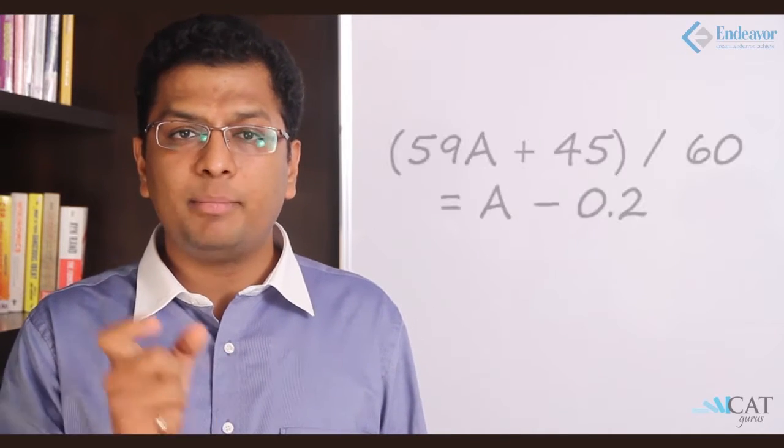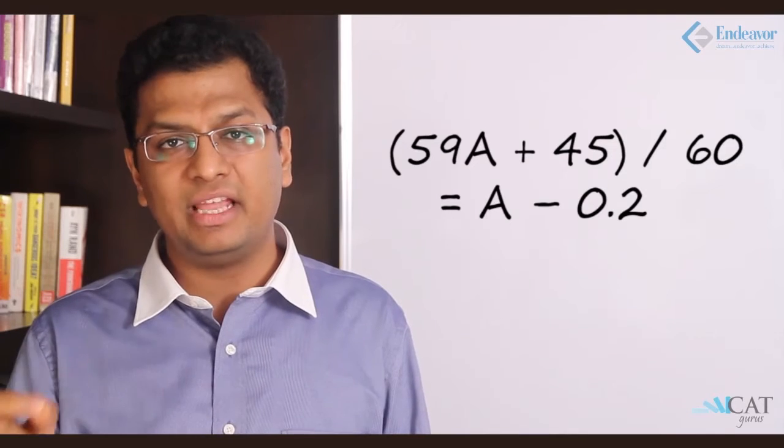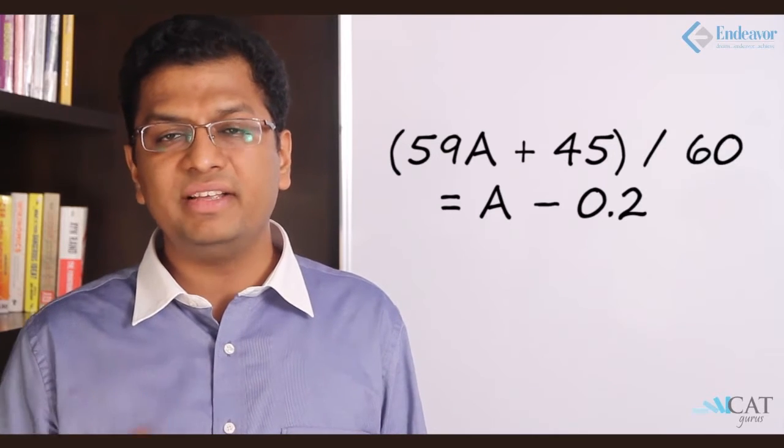If we divide this entire thing by 60, the average goes down by 200 grams. So a minus 0.2 will be the new average. So (59a plus 45) divided by 60 equals a minus 0.2. Solving this, we get a equals 57. This is where we get the new average of the class as 57.